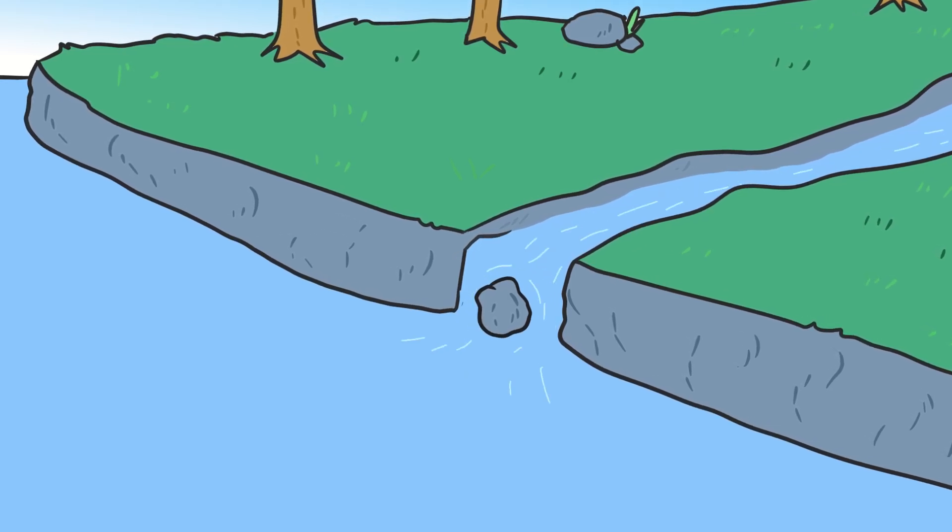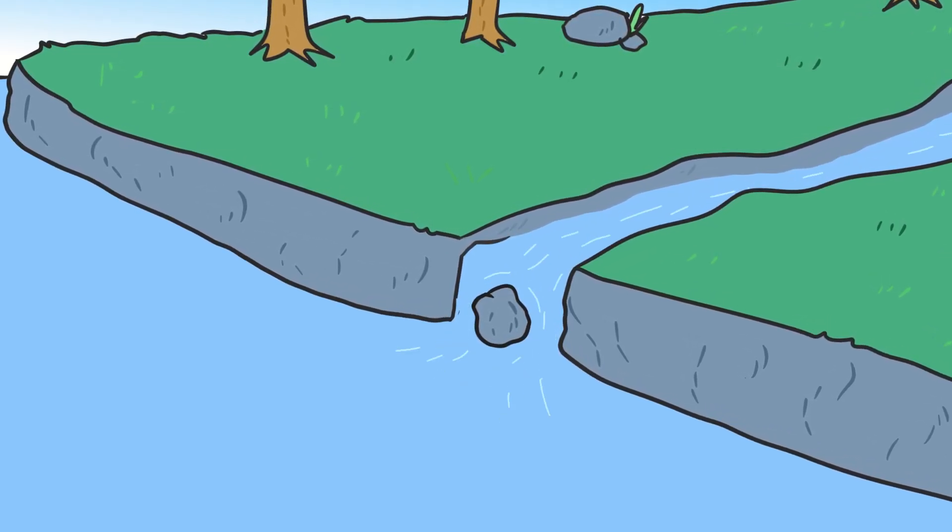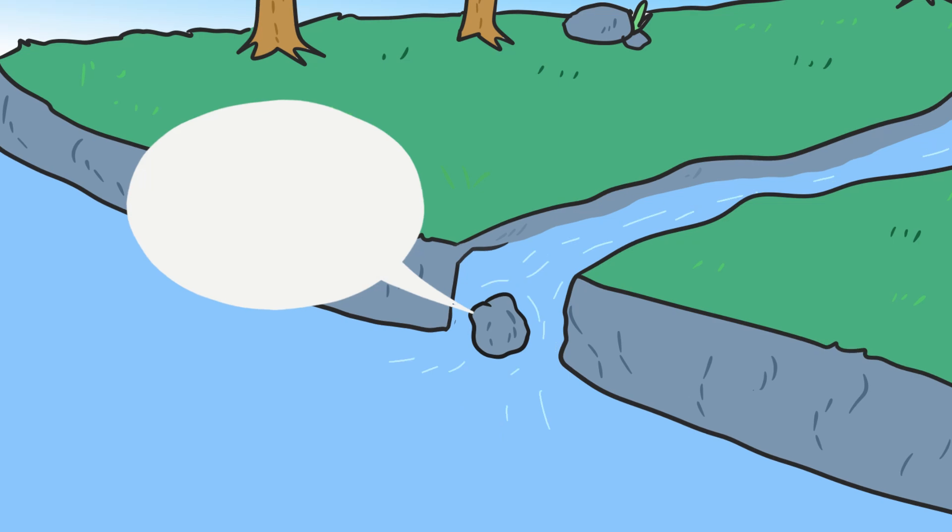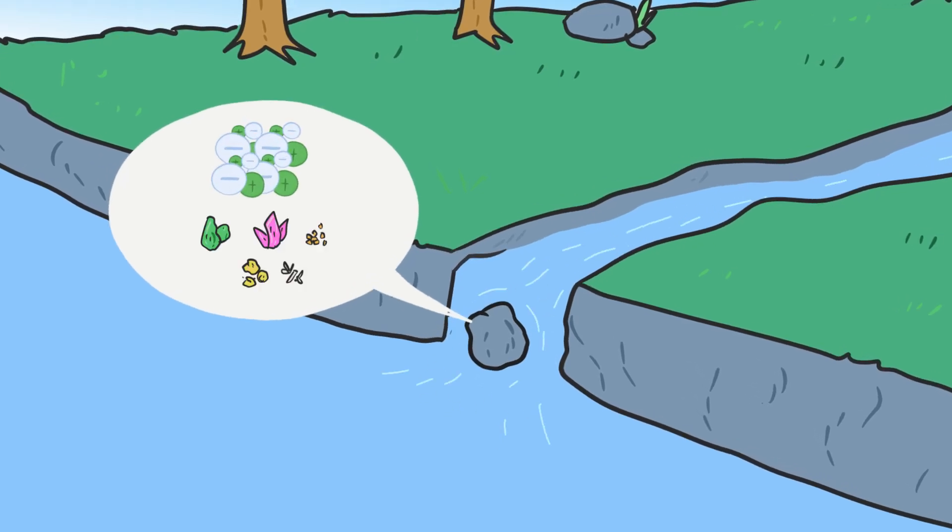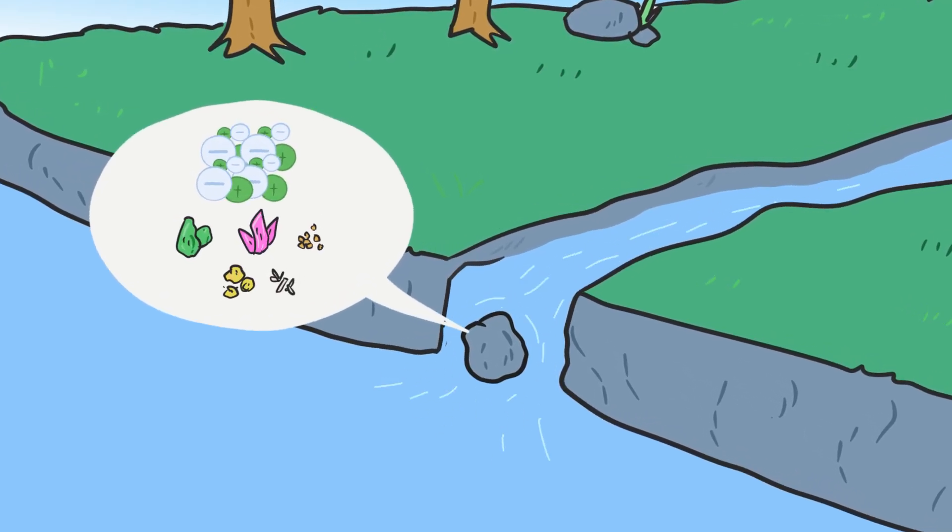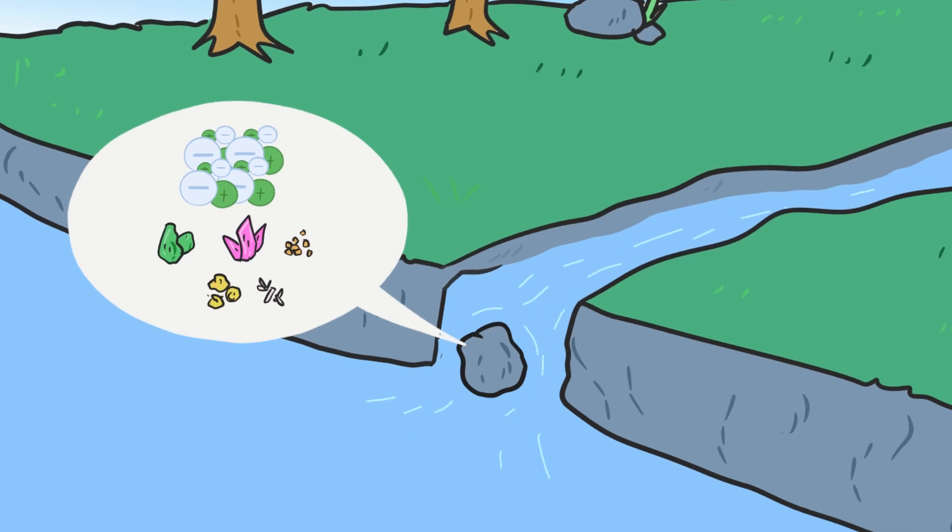When rivers, streams and rainwater flow into the ocean they can erode the rocks on the land. Rocks on land contain salt and other minerals, which dissolve into the ocean and contribute to its saltiness.